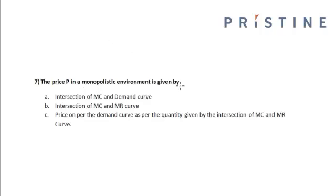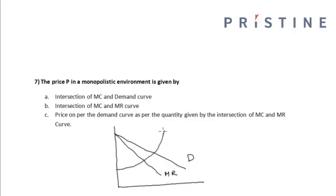The price P in a monopolistic environment is given by—let us first draw the demand curve in a monopolistic environment. So this is my demand curve, and this is my marginal revenue curve. Now, the point at which the marginal cost curve intersects the marginal revenue curve...